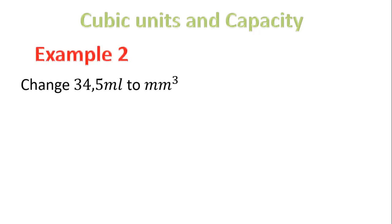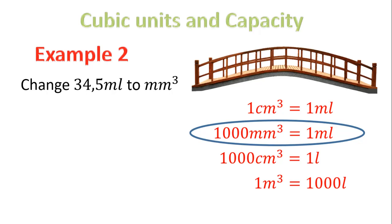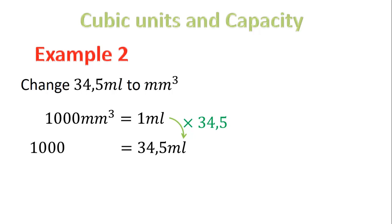Example two: change 34,5 milliliters to millimeters cubed. Let's look at our bridges — which one has milliliters and millimeters cubed? It's the second one. So we write it down: one thousand millimeters cubed equals one milliliter. They ask us for 34,5 milliliters. Make sure you keep the milliliters on the same side and the millimeters cubed on the same side. To go from one to 34,5, we times by 34,5. On the left-hand side, we have one thousand times 34,5, and that gives us 34,500 millimeters cubed.